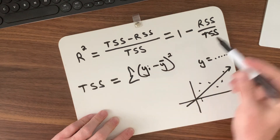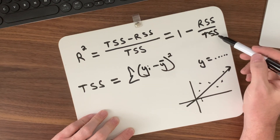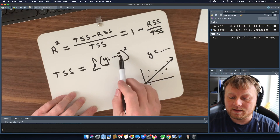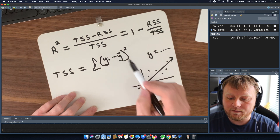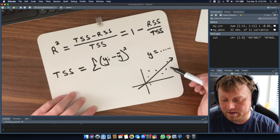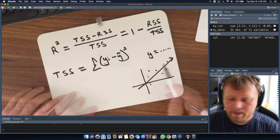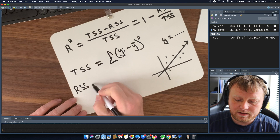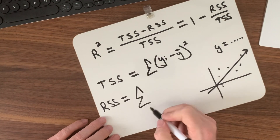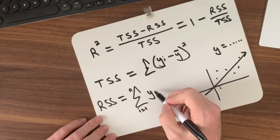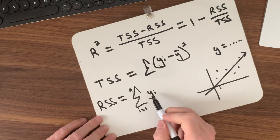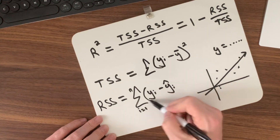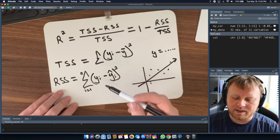So we're going to worry about both RSS and TSS. We know how to figure out TSS now — add up all the Y values, divide by the number of Y values to get Y-bar, the mean of all the Ys. Now, what is the RSS? RSS is equal to the summation from i equals 1 to N of the actual Y value minus the estimated Y value — Y-hat-i — squared.